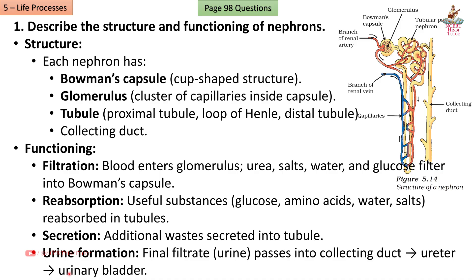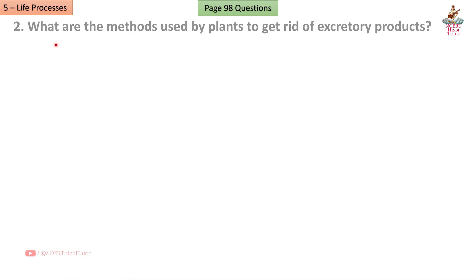Reabsorption: useful substances — glucose, amino acids, water, salts — are reabsorbed in the tubules. Secretion: additional waste is secreted into the tubule. Urine formation: the final filtrate (urine) passes into the collecting duct, then ureter, then the urinary bladder.